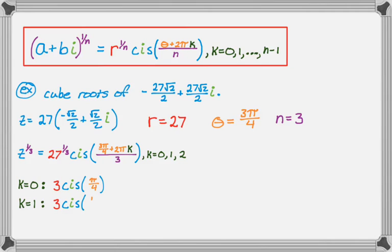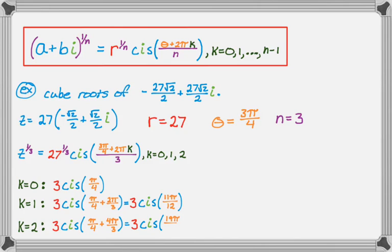So if k is equal to 1, I get pi over 4. And then I'm going to add 2 pi over 3 to that because k is equal to 1. You go back to the formula. And then that gives you 11 pi over 12. So 3 cis 11 pi over 12. And if k is equal to 2, it's going to be pi over 4 and then plus 2 times 2 pi over 3. So plus 4 pi over 3, which gives me 3 cis 19 pi over 12.